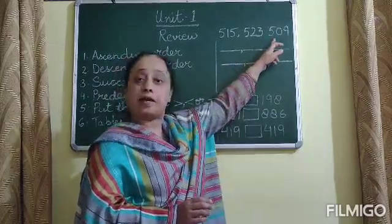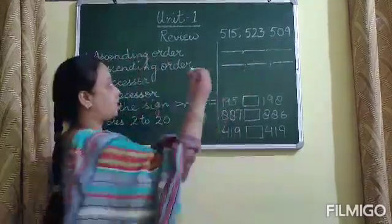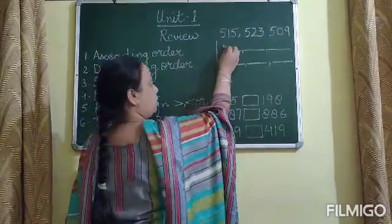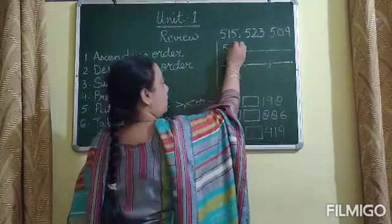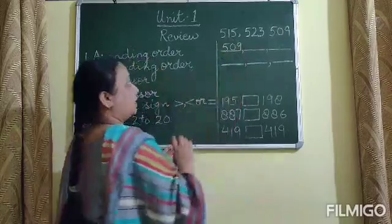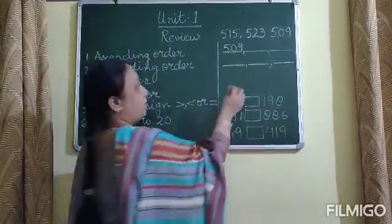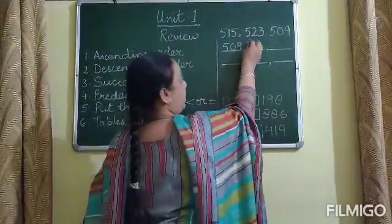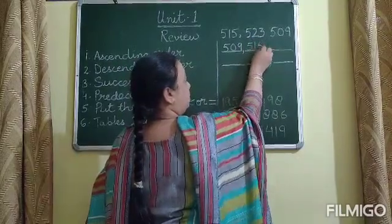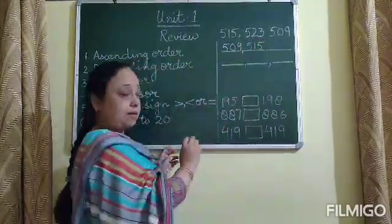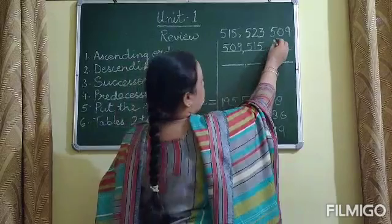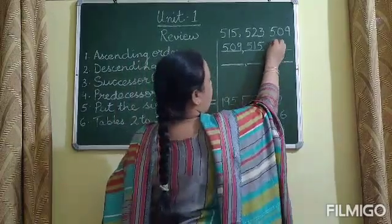The first number we are going to place in the order is 509, and the second number which will come in the order will be 515. And the third number, the greatest number, is 523.